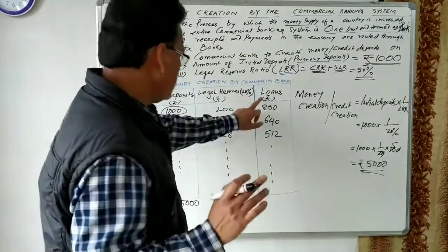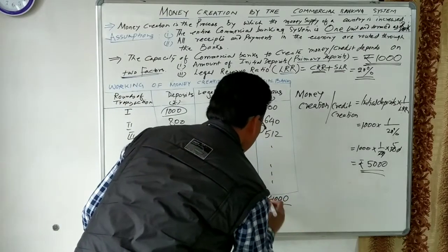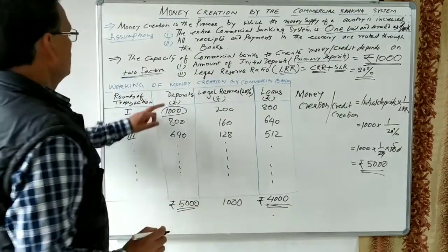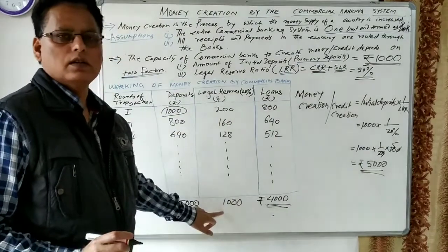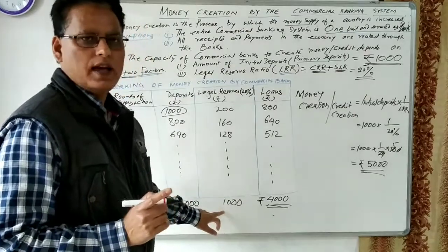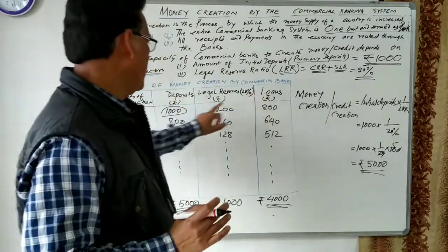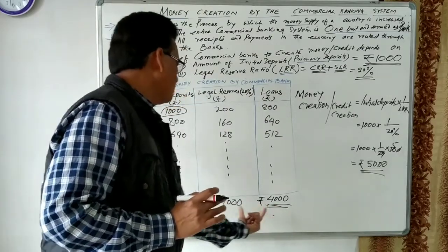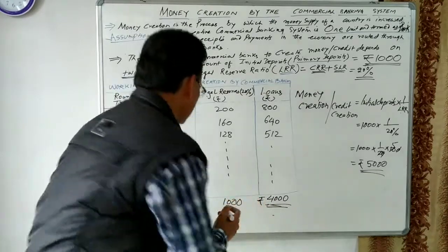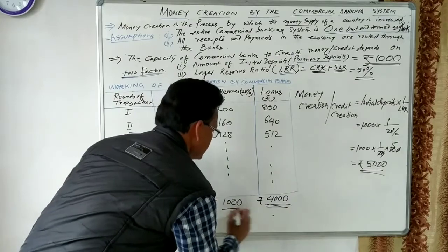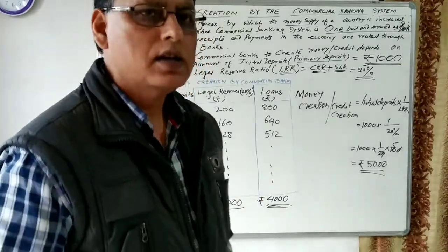From the Rs. 5,000 total deposit created: total loan sanctioned = 80% of Rs. 5,000 = Rs. 4,000; total reserve kept by the commercial banks = Rs. 1,000. On the asset side: Rs. 4,000 (loans) + Rs. 1,000 (reserves) = Rs. 5,000, which equals total liabilities (deposits). Assets and liabilities of the banking system are both Rs. 5,000.